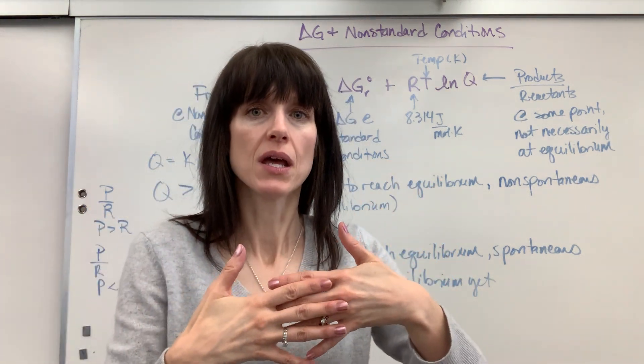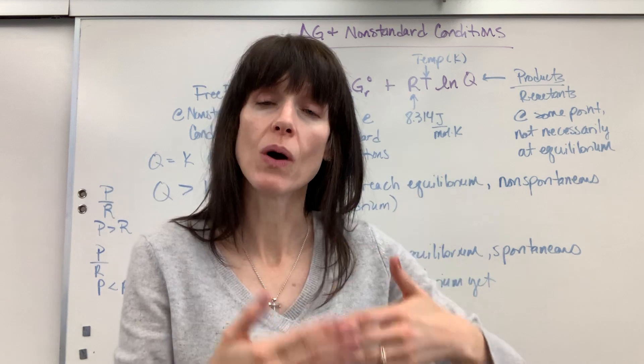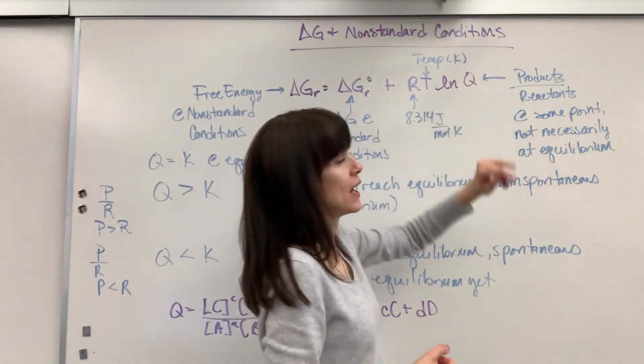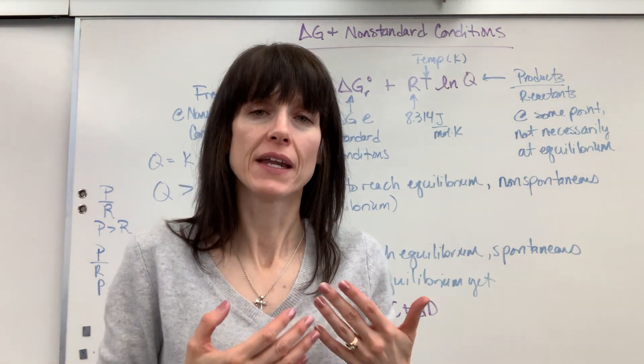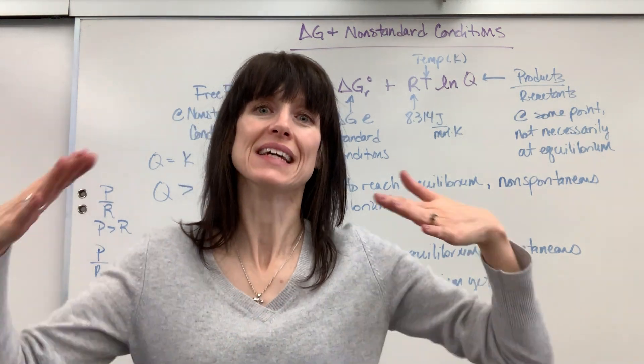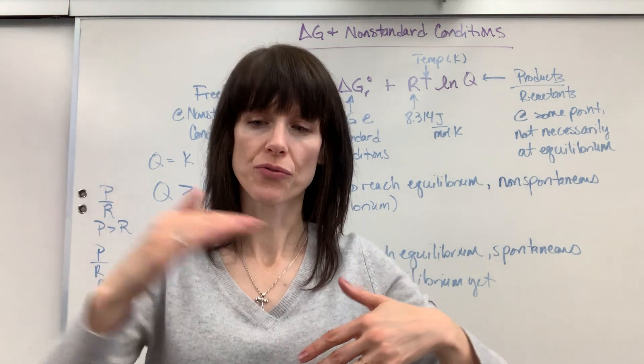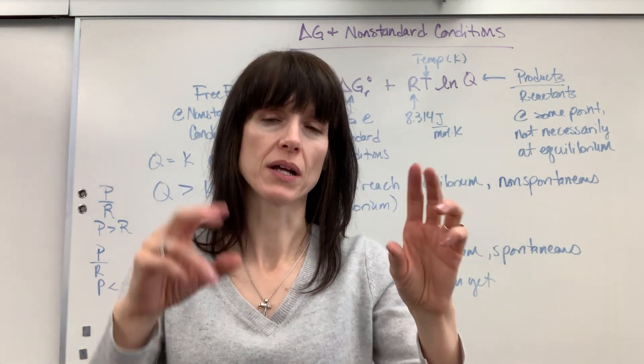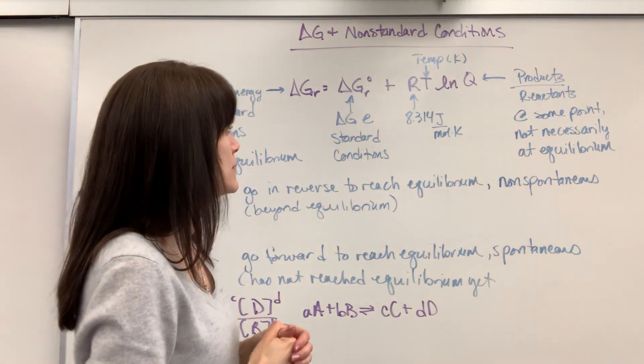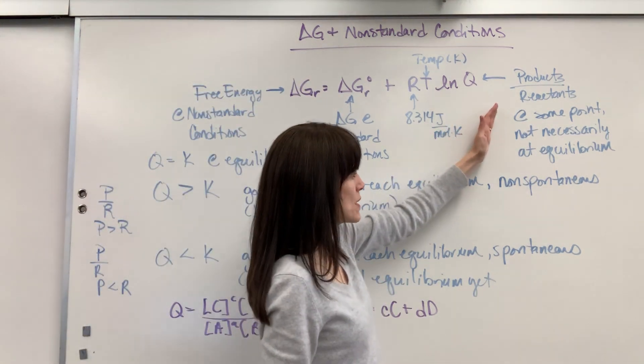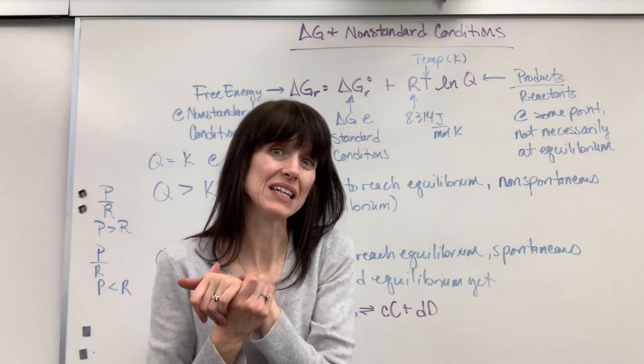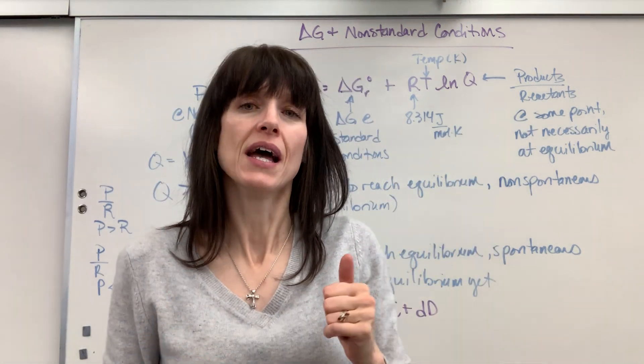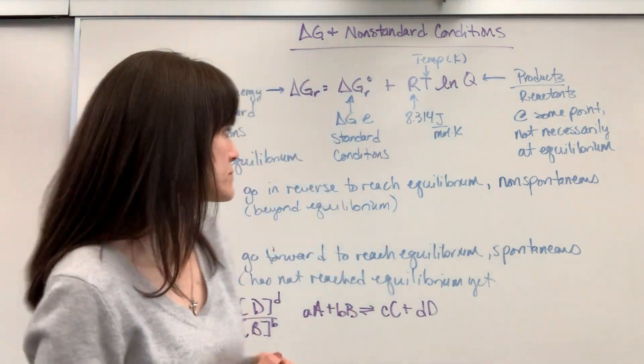Now Q is just the ratio of products over reactants at some snapshot. This reaction is going to happen, and we're wondering, at this moment, what's the ratio of products and reactants? K, our equilibrium expression, that's really special. So that is when we are at perfect equal rates, where the forward and reverse rate are equal to each other, what's the ratio of products compared to reactants? So this is at some moment. Notice I put at some point, and it's not necessarily at equilibrium. We're taking a measurement of the amount of reactants and products, and we're going to compare that to K.